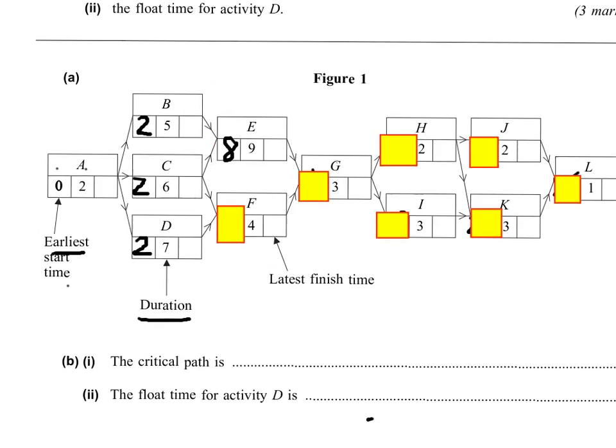Starting from activity F, F depends on C and D's finishing time, so 2 plus 6 is 8, and 2 plus 7 is 9. And F will have to wait for the slow coach D, so starting time is 9. And G is 17, H is 20.